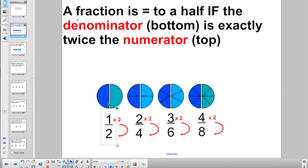So the main concept of the day: a fraction is equal to a half if the denominator, meaning the bottom number, is exactly twice the numerator, the top. And by twice, we mean times it by two.